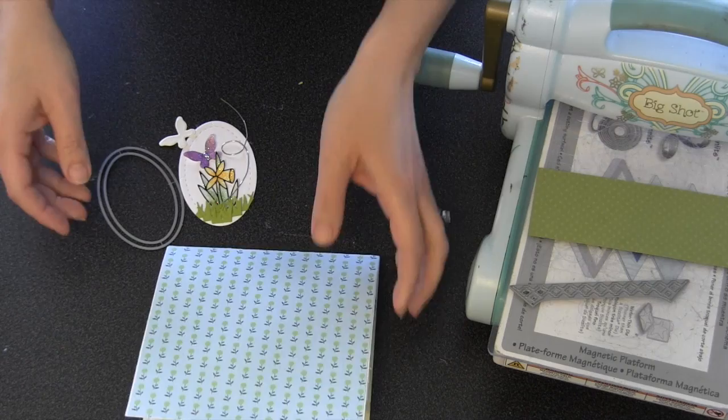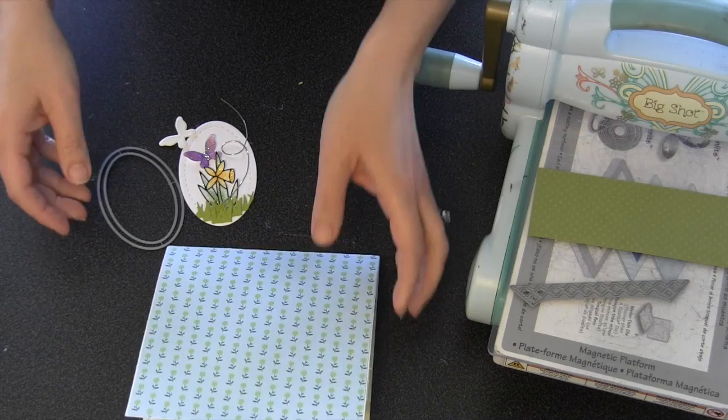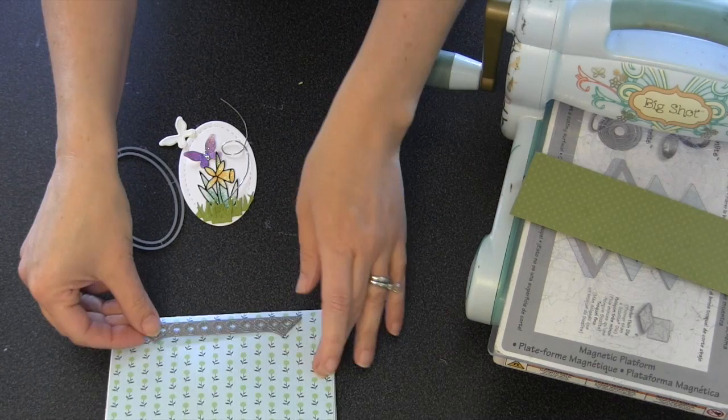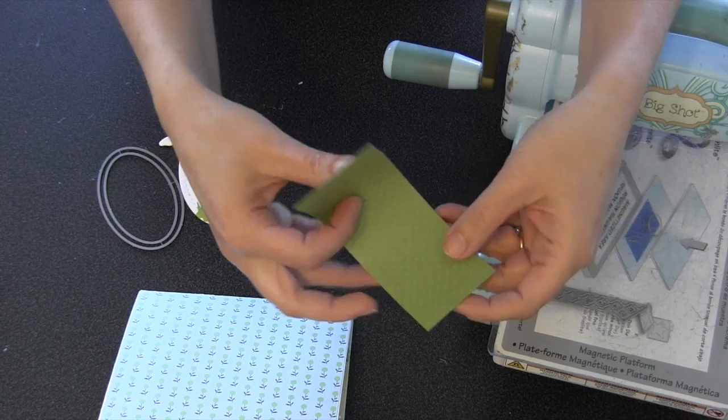My last little bit of decorating was to do the card front. One thing that I thought would look nice around the outside would be to do the fancy frame edges, the trellis version. However, the die itself cuts an edge that was not wide enough for my card. No problem.